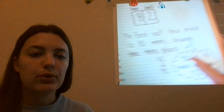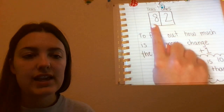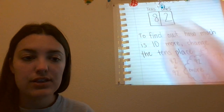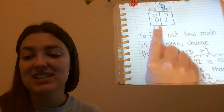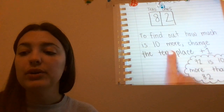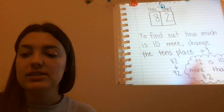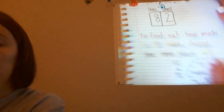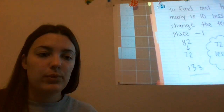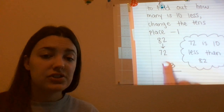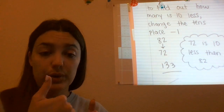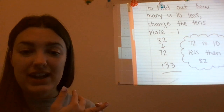Earlier this week we talked about how to find ten more and ten less. By looking at the tens and the ones and changing the tens place to either one larger or one smaller, we could figure out what ten more and ten less is. To find out how much is ten more, change the tens place plus one — so in this case we changed our eight to a nine. And to find out how much is ten less, change the tens place minus one — like 82 to 72. That's what we learned about in chapter 7. I don't have an official test for that.